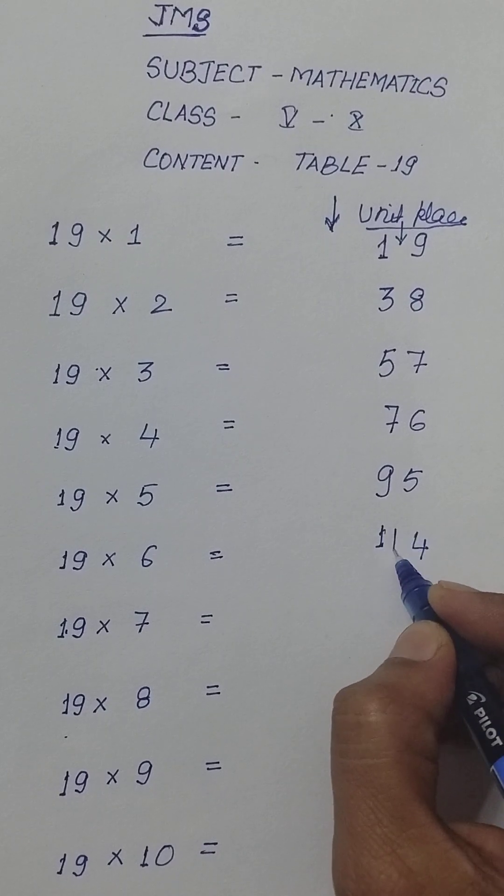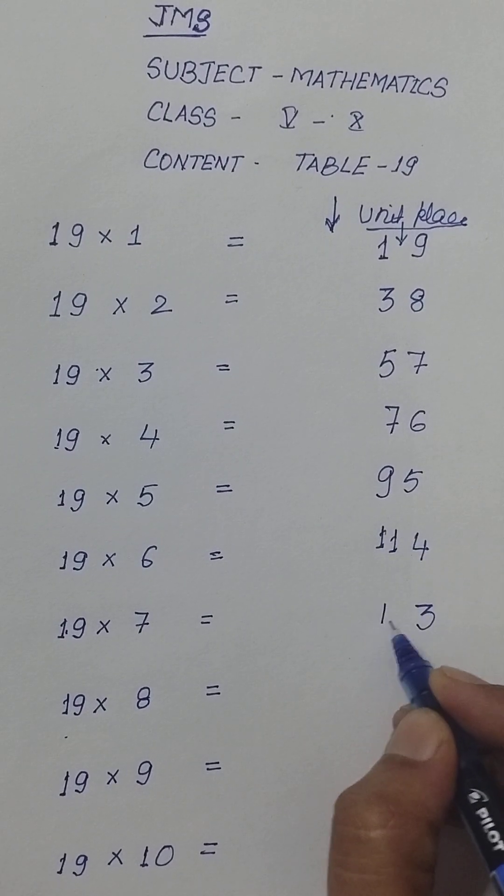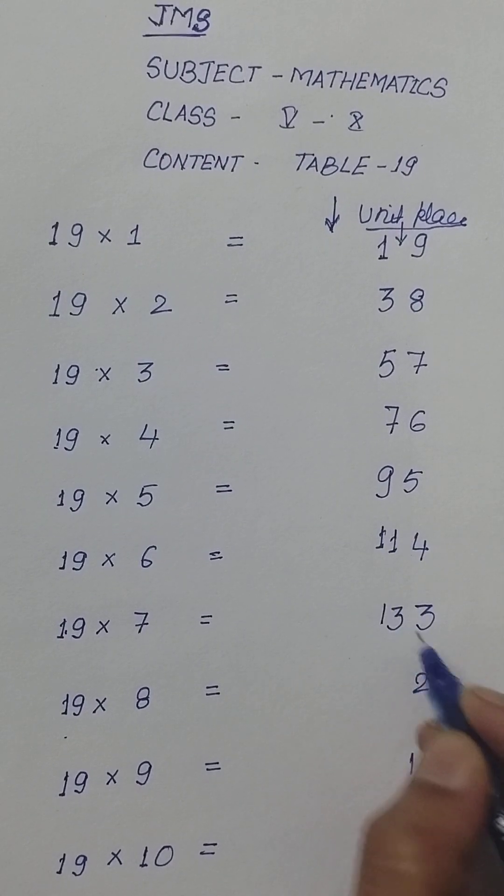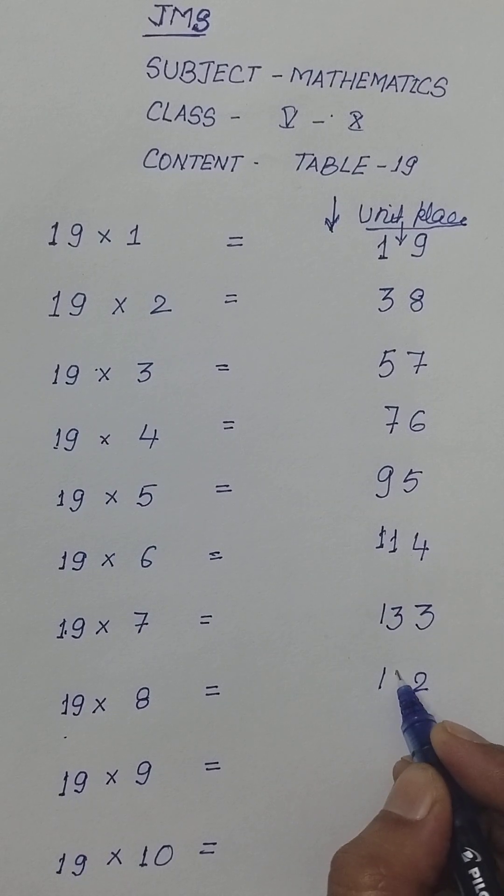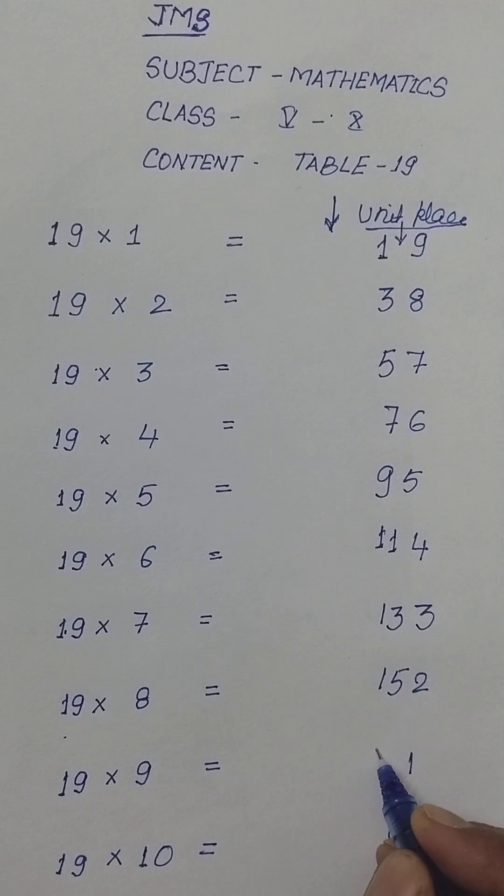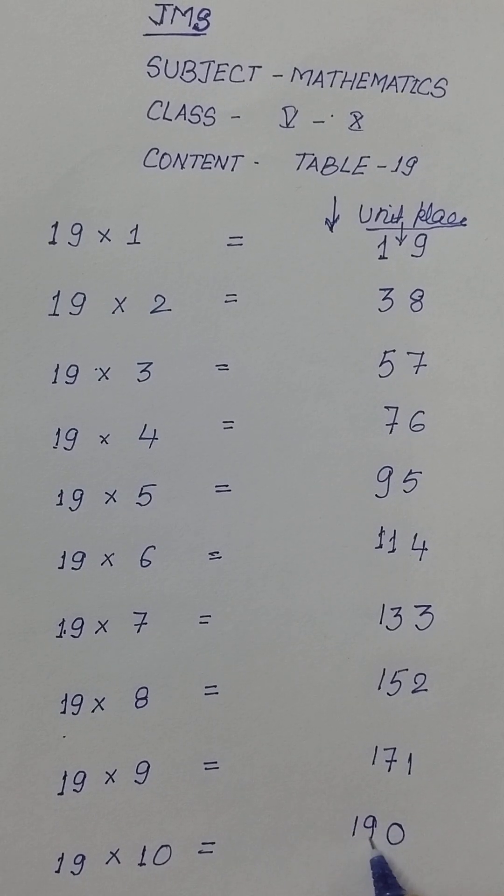Next odd number is 11, next odd number is 13, next odd number is 15, next odd number is 17 and next odd number is 19.